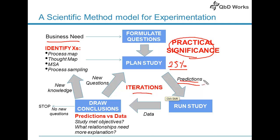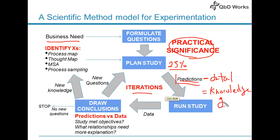The reason predictions are important is that the difference between your prediction and the actual data is your knowledge gap. If you knew what the results of a process would be, you have very little knowledge gap — meaning you have good understanding of your process. However, if there's a big delta between your data and your prediction, you have a huge knowledge gap. That's the metric of how well you understand your process.